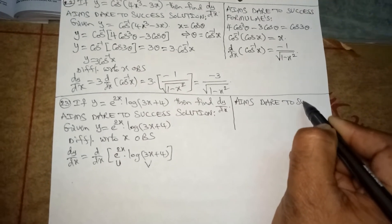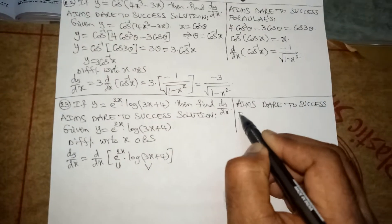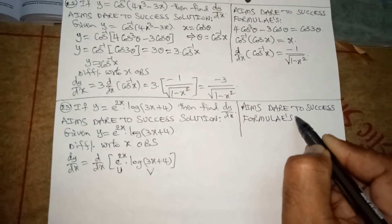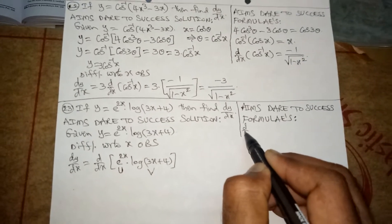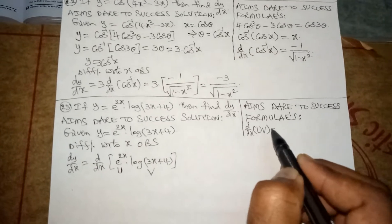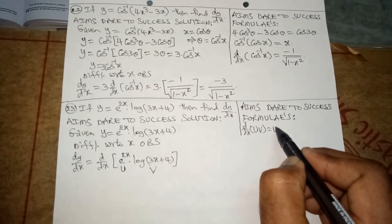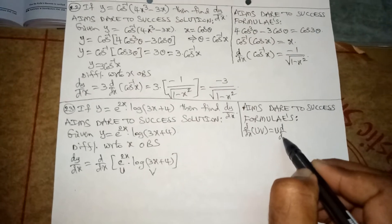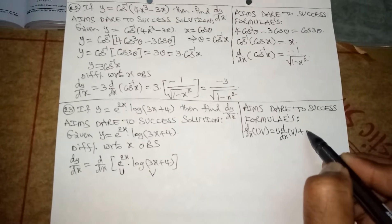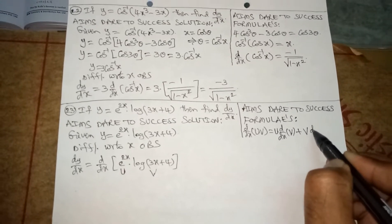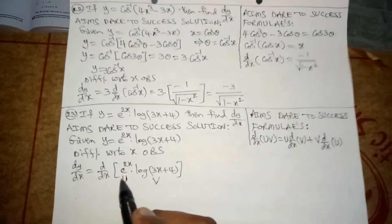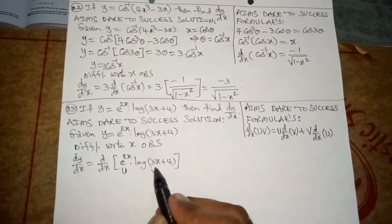Dare to Success formulas: d/dx of u·v — u is the first value, v is the second value. So: first value write outside u, into second value derivative d/dx of v, plus second value write outside v, into d/dx of first value u. Here u is e^(2x) and v is log(3x + 4).